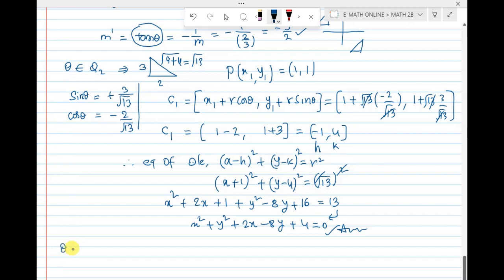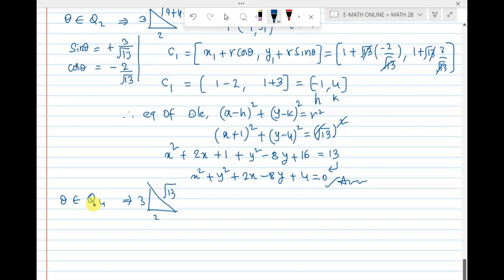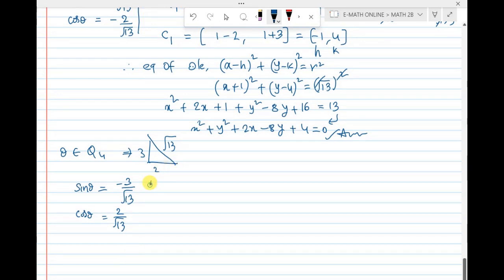Therefore, equation of circle: x square, write all terms, y square, x square, y square, then 2x, then minus 8y, 1 plus 16 is 17, 17 minus 13 on this side, 4 equal to 0, which is the answer. This is only case 1. Case 2: if theta belongs to Q4.